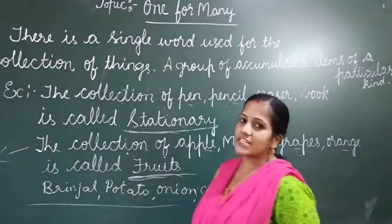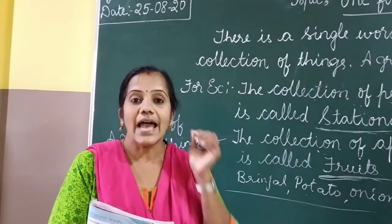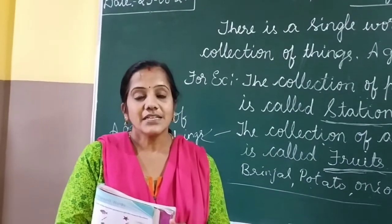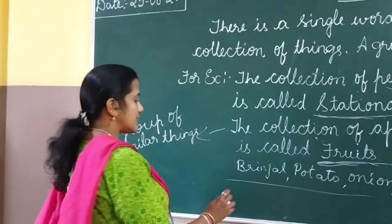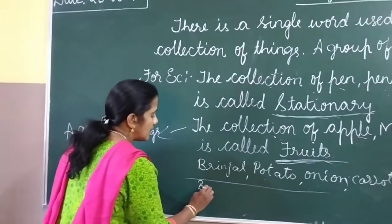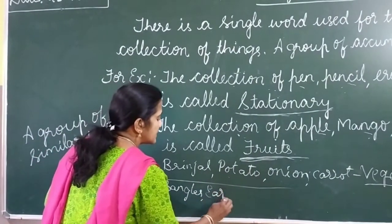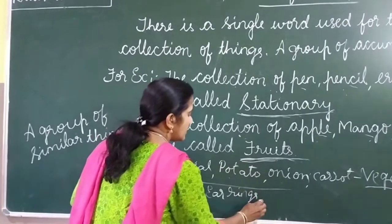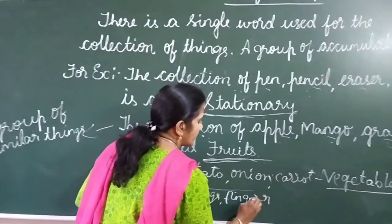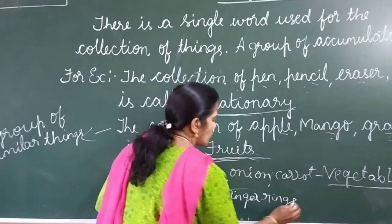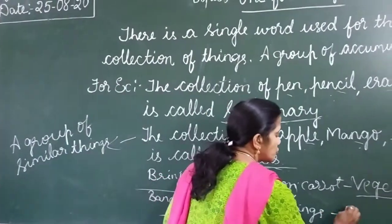Again, for example, the collection of things girls wear — bangles, earrings, finger rings. The collection of these things, what do we call them as? It is jewellery. So the collection of bangles, earrings, and finger rings — there is a single word, it is called jewellery.